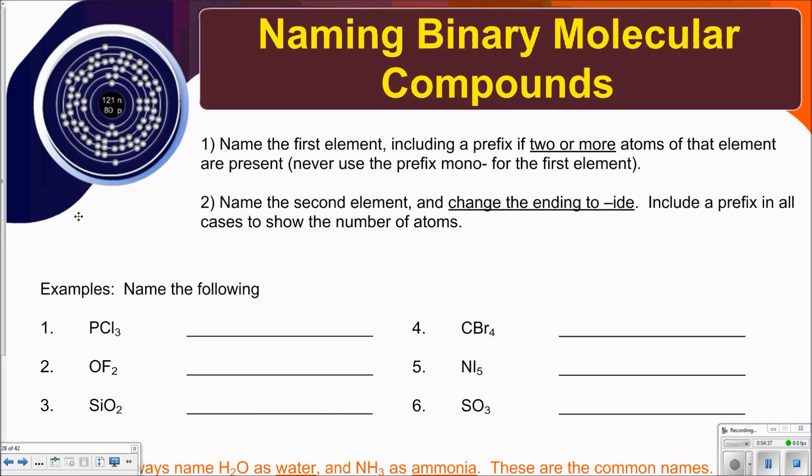Naming binary molecular compounds. First, you're going to name the element, including a prefix if two or more atoms of that element are present. Never use the prefix mono for the first element.